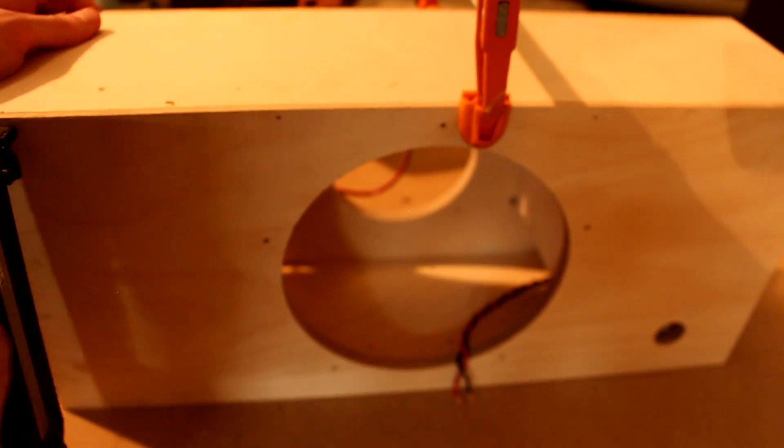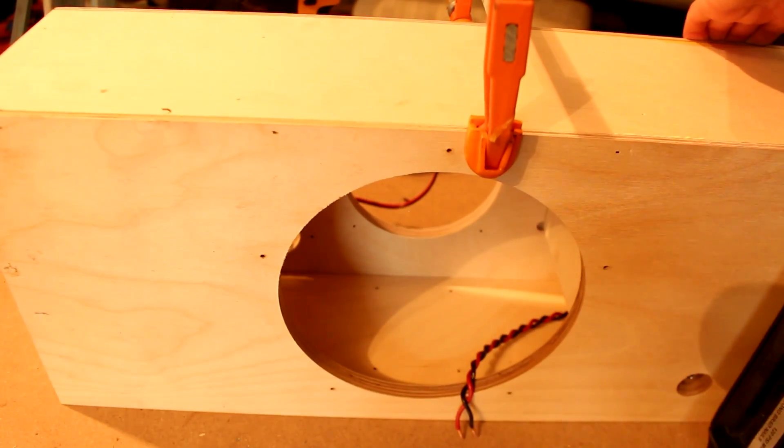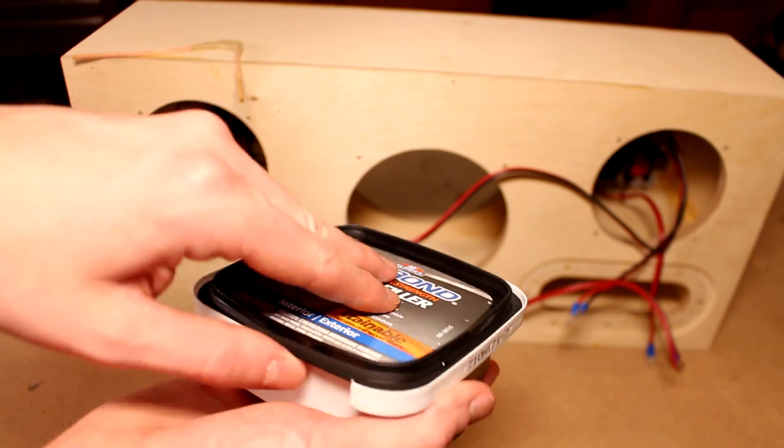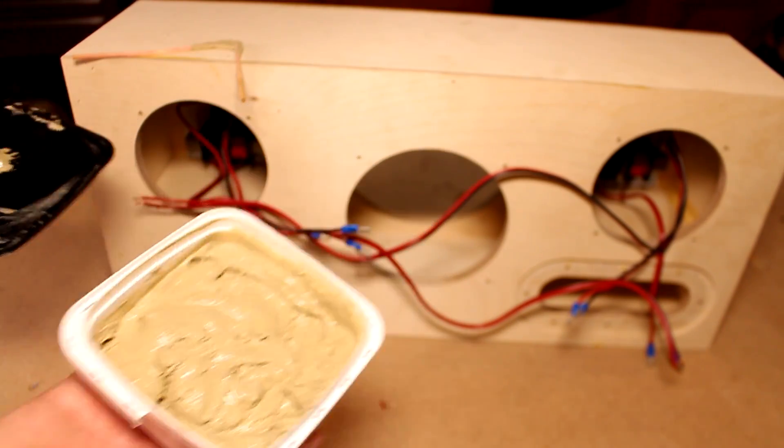Now comes the fun part, which is finishing—just kidding, this part isn't fun at all. Here I'm using indoor-outdoor wood filler to fill in any pinholes and imperfections in the wood that might be visible underneath the coating I'm going to roll on.